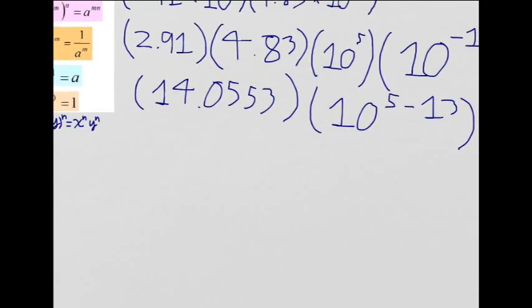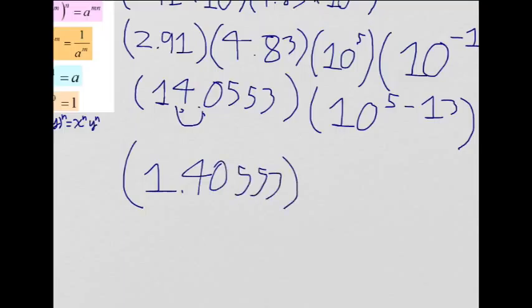Over here, we could pull one out by moving the decimal place. We would create 1.40553 times 10 to the 1st times 10 to the negative 8th.